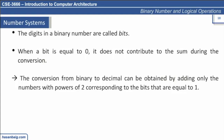In terms of terminology, the digits in a binary number system are referred to as bits. When a bit is equal to 0, it does not contribute to the sum. So for a number like 1, 0, 1, 0, when I convert this to decimal, multiplying a 0 bit by any power of 2 still gives 0. So we can skip calculating those and simply include the values that have a bit equal to 1.